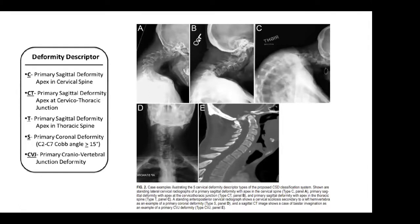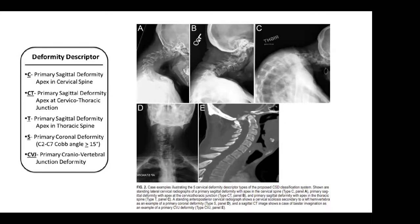In terms of the deformity descriptors: a type C is a primary sagittal deformity with an apex in the cervical spine; the next has an apex in the cervicothoracic junction; then there's an apex in the thoracic spine. Primary coronal deformities are deemed type S. And the last descriptor is CVJ — a craniovertebral junction deformity.